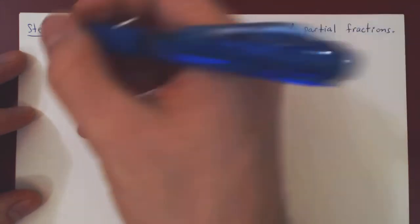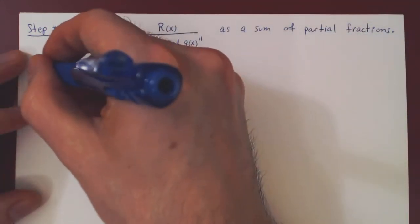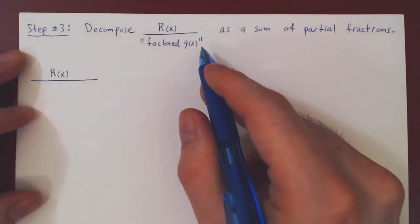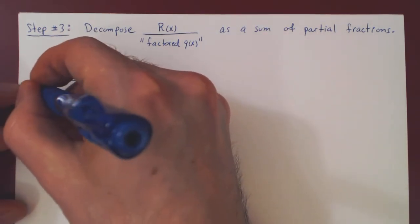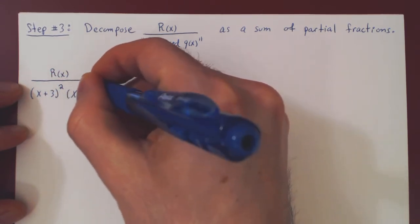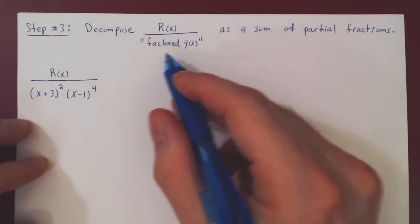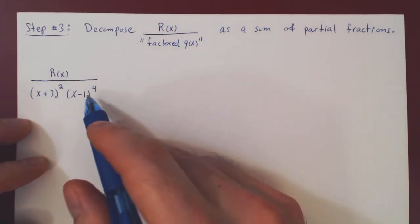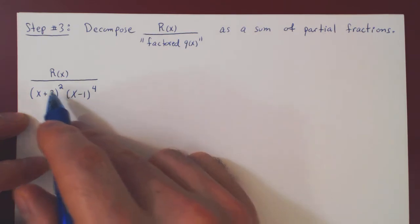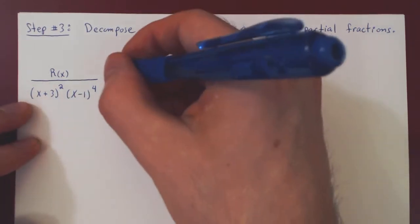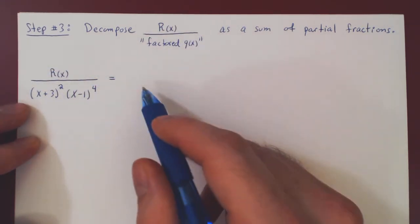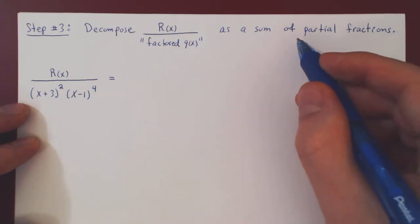So suppose our first example is the following. We have R of x over Q of x, where Q is fully factored over the real numbers as x plus 3 squared times x minus 1 to the fourth power. So Q of x would have been x plus 3 times x plus 3 times x minus 1 four times, but once Q is fully factored, we regroup similar factors together. And now we ask: how can we decompose this single rational function into a sum of simpler rational functions known as partial fractions?